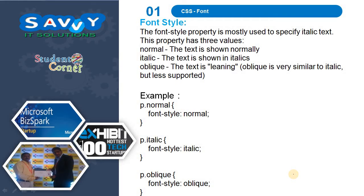The next one is font style. The font-style property is mostly used to specify italic text. This property has three values: normal — the text is shown normally; italic — the text is shown in italics; oblique — the text is leaning. Oblique is very similar to italic but less supported.